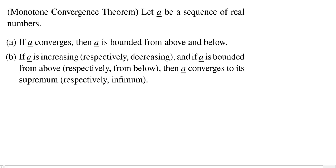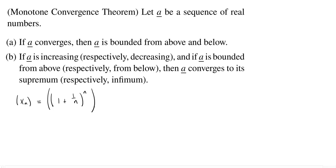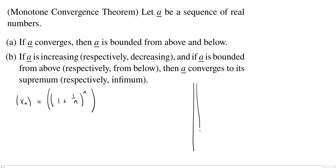I'm going to define a sequence, call it x sub n. The nth term of the sequence is going to be 1 plus 1 over n, raised to the nth power. What I would like to do is show that this sequence is increasing and bounded from above. In order to show it's increasing, I'm going to use a very useful result for showing inequalities called the AM-GM inequality.